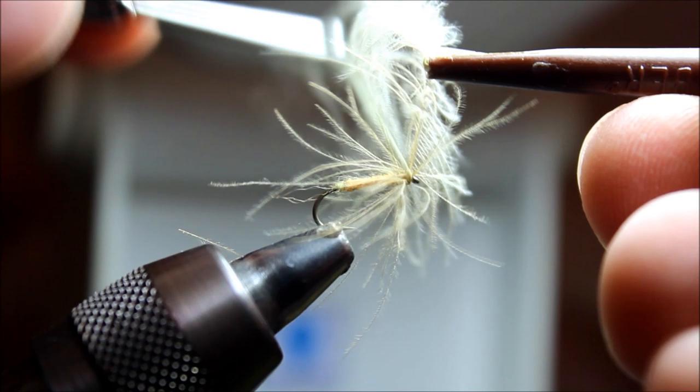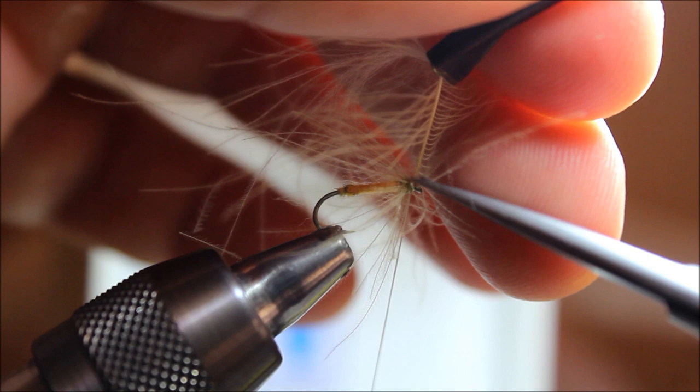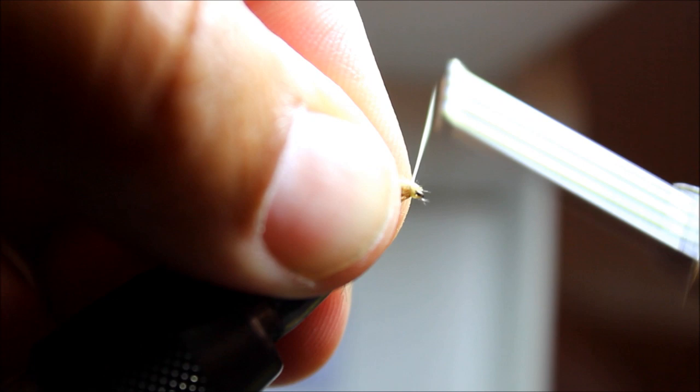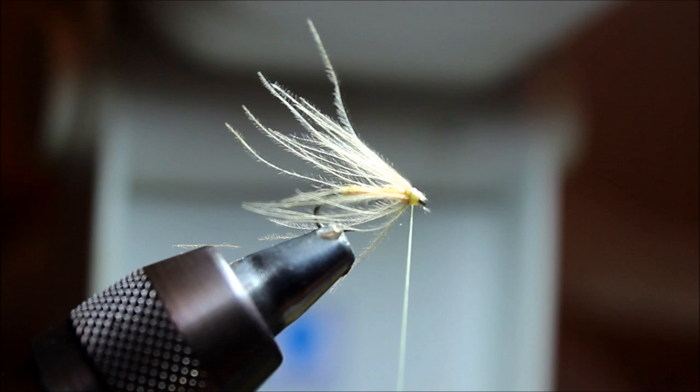Because some of the fibers do get chewed off while you're fishing it, so you can go ahead and dress it fairly heavily. I'm going to tie that feather off right there after four or five wraps. Try to clean up the head the best I can, leaving plenty of space at the eye, and try to tidy up a neat head right here.